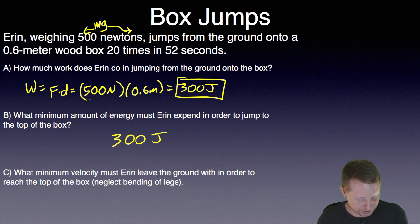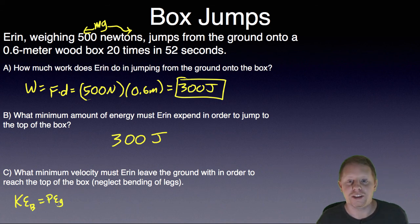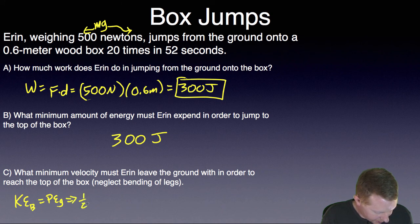And what minimum velocity must Aaron leave the ground with in order to reach the top of the box? And we're going to neglect the bending of legs? Well, here we can look at kinetic energy potential energy again. The kinetic energy of Aaron before she jumps, right as she leaves the ground, must be equal to the gravitational potential energy when she's on top of the box. So we could write 1 half mv squared, the kinetic energy, is equal to mgh at the top.